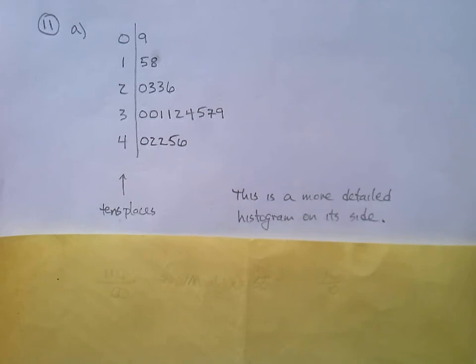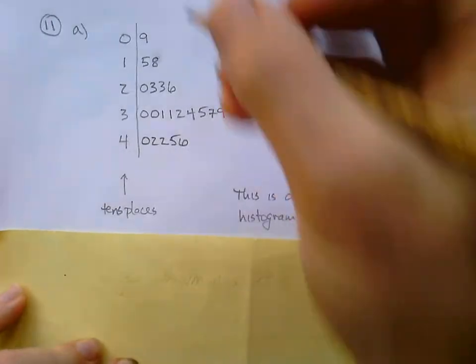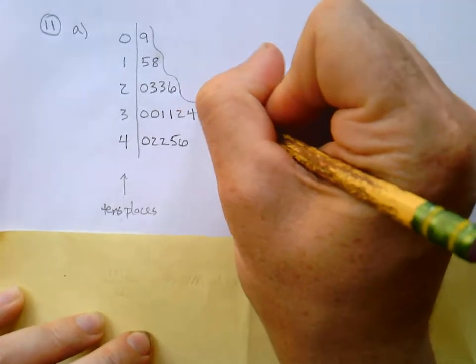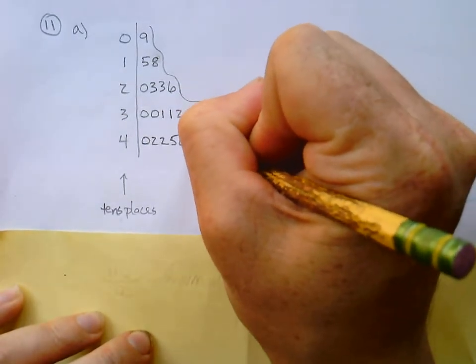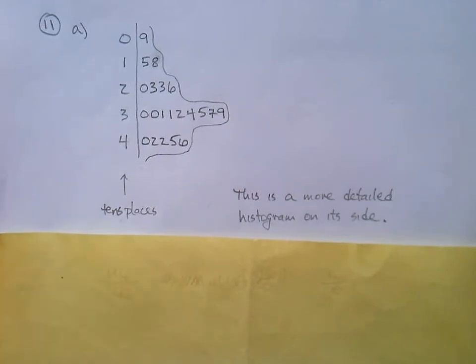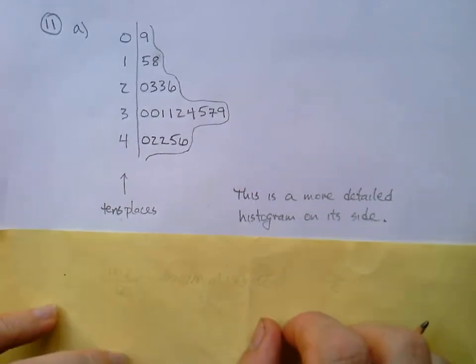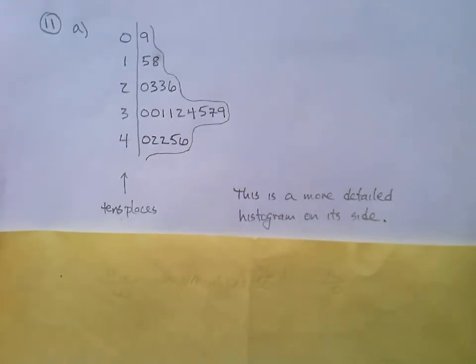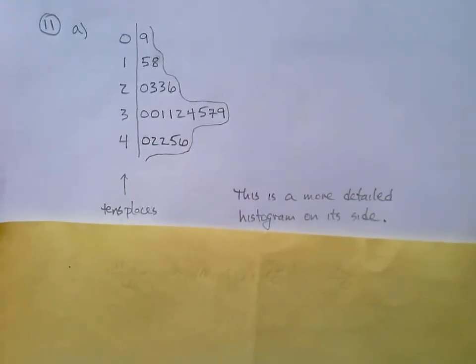And then we've got part B there. Describe the shape of the distribution. Now, this is where the histogram is going to come in nicely. What is the shape? And what you can do is just sort of draw sort of these curves around it to kind of give you the shape of that histogram. And then, you know, I won't move the camera again. Almost like tilt your head to the side.